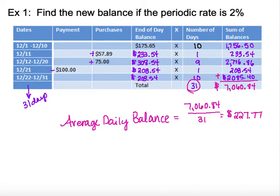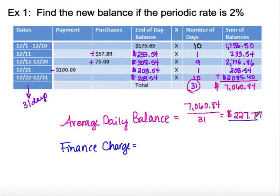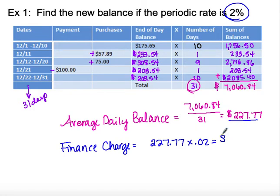Now let's calculate the finance charge. This looks like yesterday's except we're not doing it on the unpaid balance. We take the average daily balance of $227.77 and multiply it by a rate of 2%, which gives us a finance charge of $4.56.